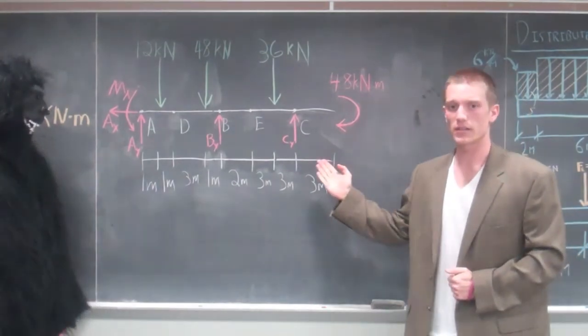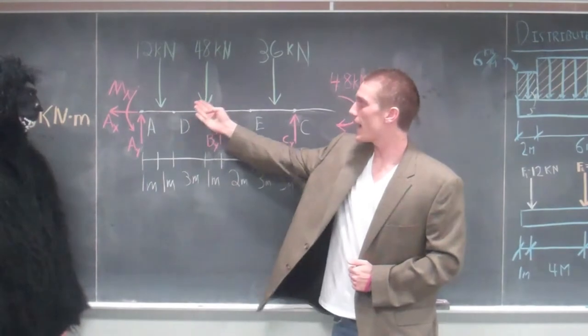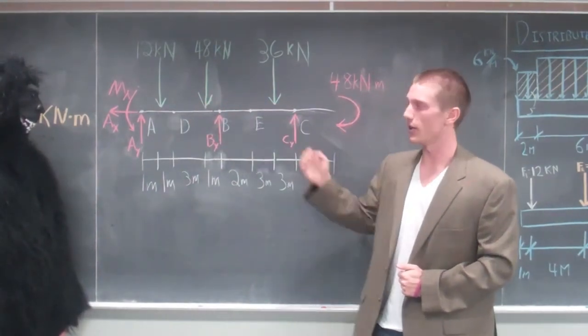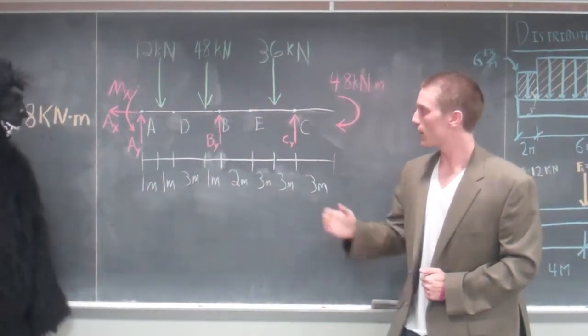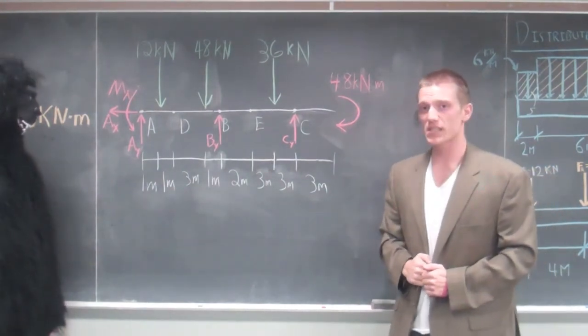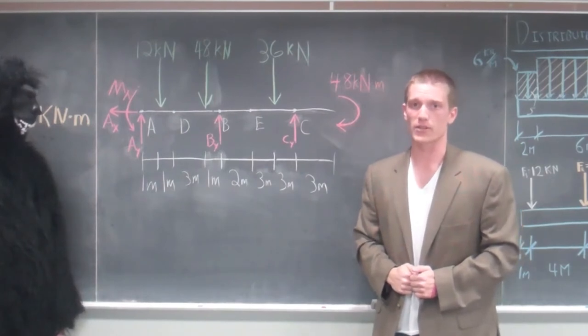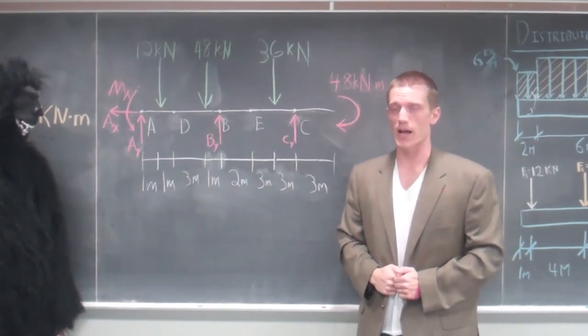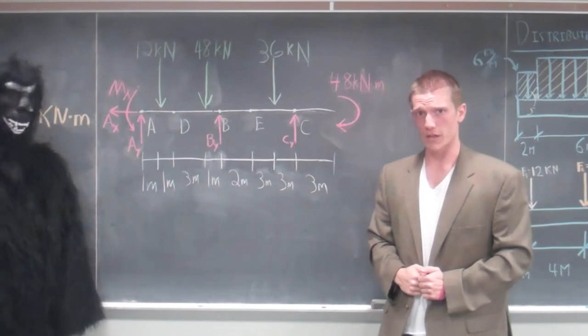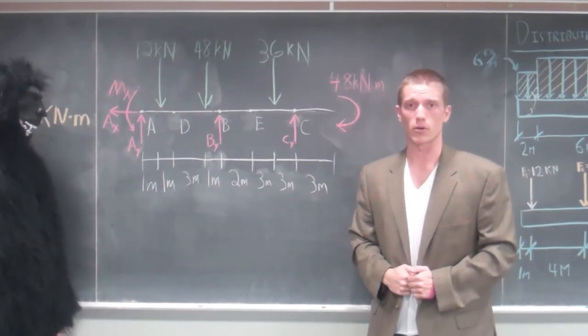Here we have our adjusted free body diagram. We have added the forces from the distributive load, and we have the support reactions from A, B, and C. B and C are rocker supports, so they only have vertical support reactions. A was a fixed support, and because it's a fixed support, it has a moment, a vertical, and a horizontal support reaction.